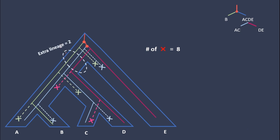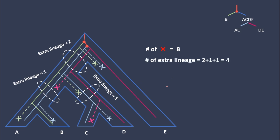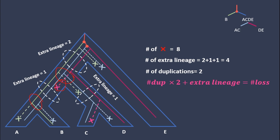So this is how the genes evolve in these species. We can see that the number of losses is eight. There are two extra lineages here, one here, and one here, so the total number of extra lineages is four. Remember, we count extra lineages only between two adjacent speciation points, and we do not count lost genes as lineages. For the final part, the formula is: number of duplications times two plus number of extra lineages equals number of losses. Using this formula we can verify our solution. Comment your solution for problem number three — I will upload a solution in my next video.